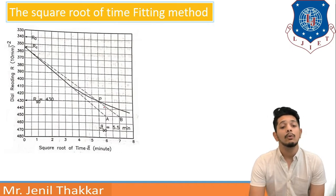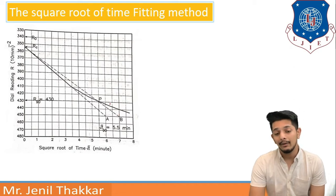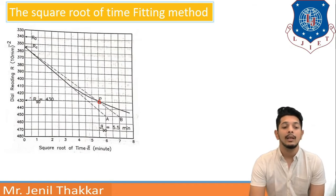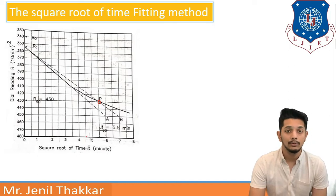Now from graph from that experiment for particular experiment we can get this under root t90 value as 5.5 minutes from point p as the point p is showing 90 percentage degree of consolidation as dial gauge reading as well as in terms of under root t.